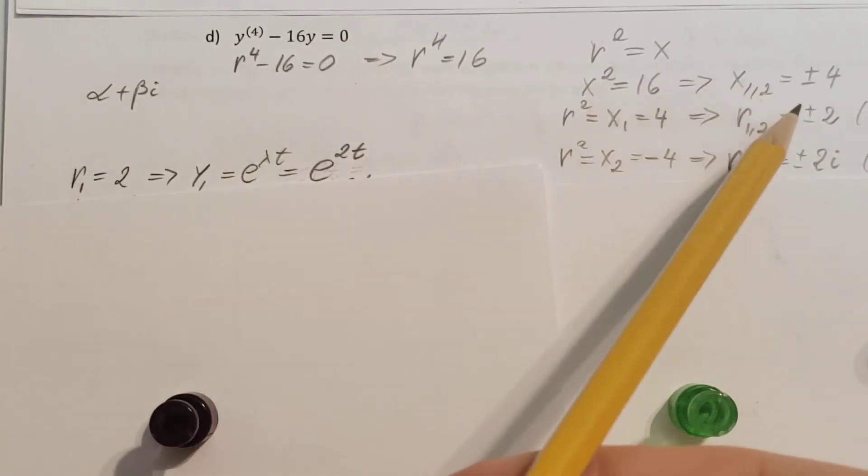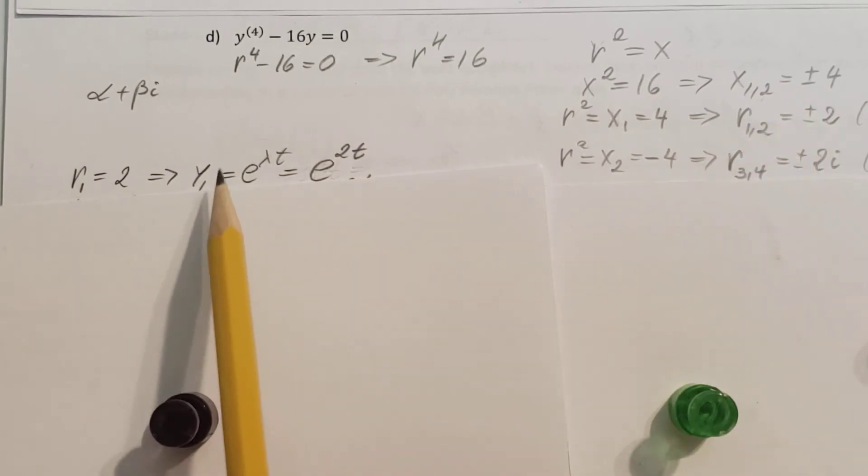For a real root, we're gonna have simply e to lambda t. So, the first one, r1, will be equal to 2. So that's gonna give me a y1 equal e lambda t. And my lambda is the 2, so simply e to the 2t.